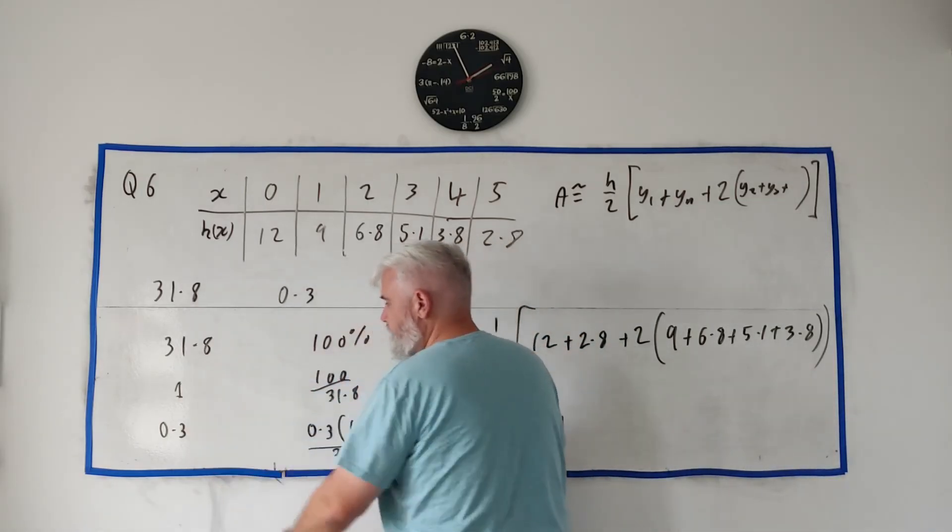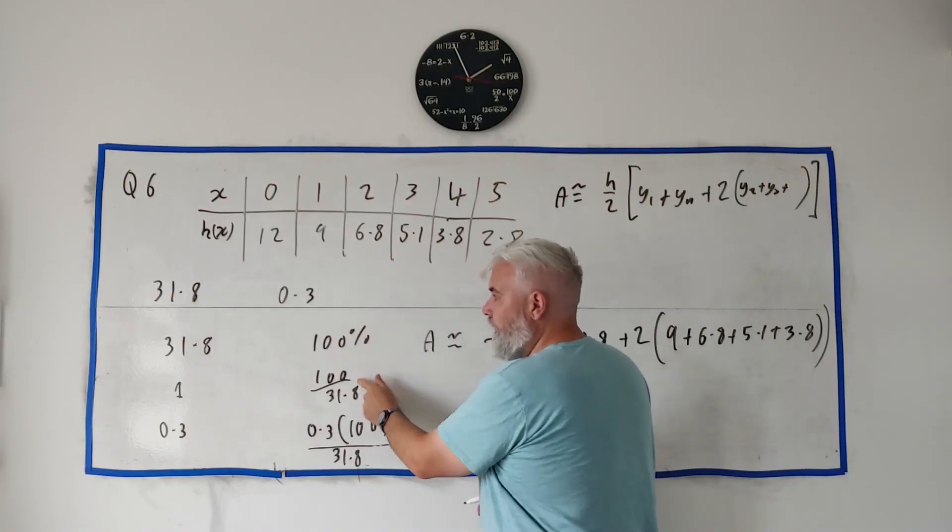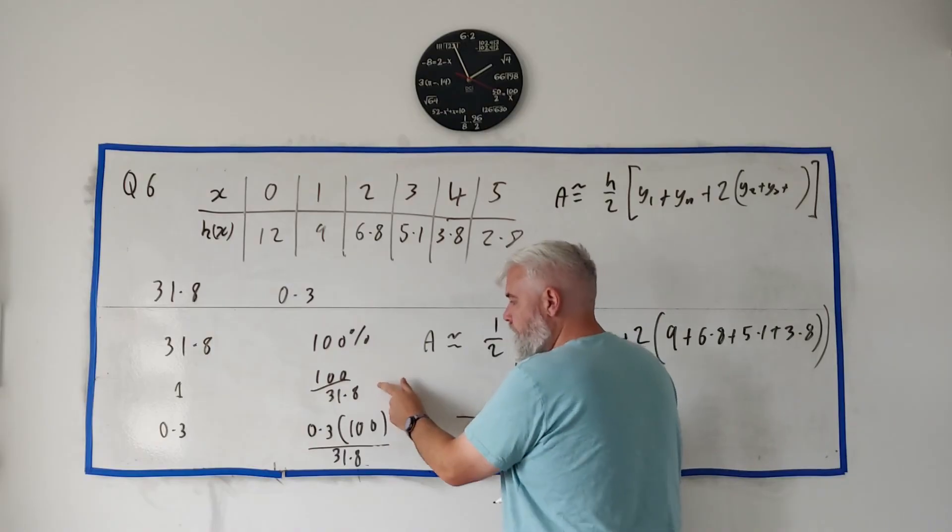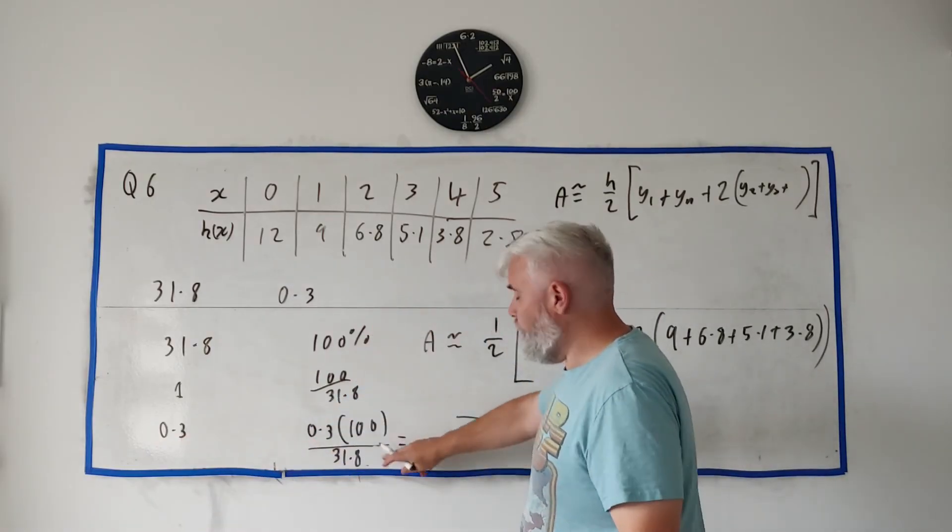So look what I've done there. I've changed this number into one, changed it into this, and then to be fair I did the same with the percentages. Changed this by dividing it by 31.8, changed it down here by multiplying with 0.3. So put all that into a calculator.